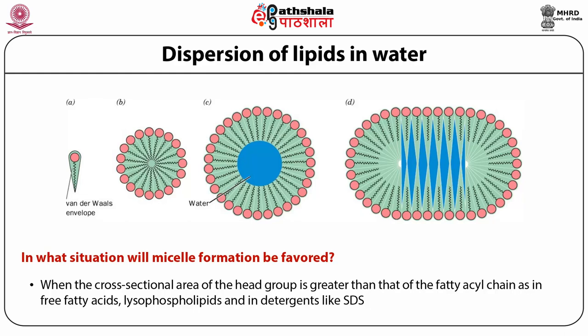Too many or too few lipid molecules result in energetically unstable structures, which can lead to the collapse of the micellar structure. You need an ideal concentration — the critical micellar concentration — to be attained in the lipid solution placed in an aqueous solvent to produce a perfect micellar structure that is thermodynamically and energetically favorable, and hence stable.